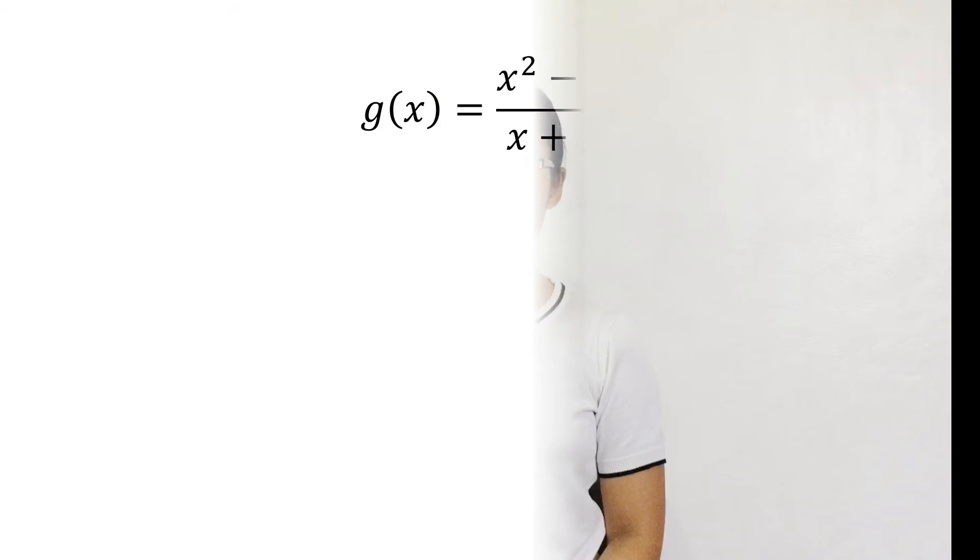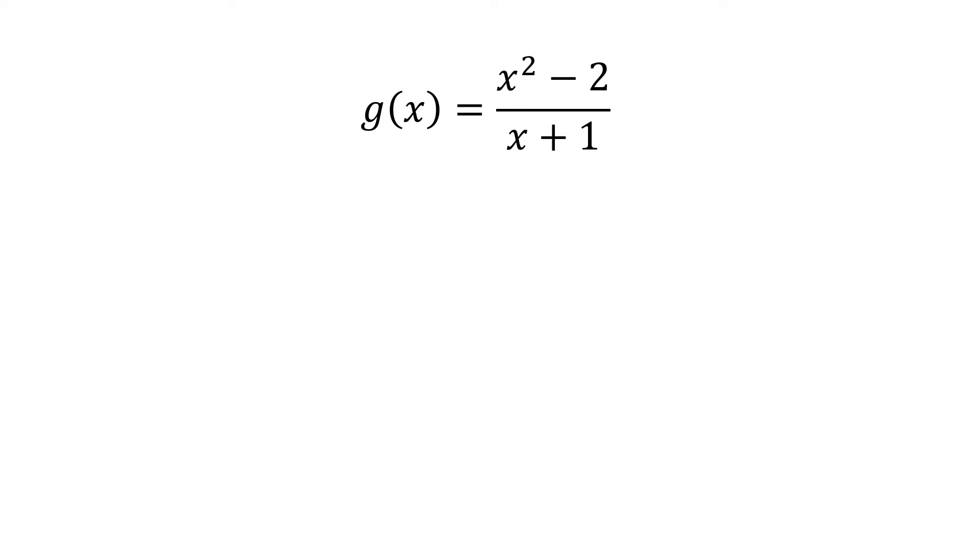For example, we have g(x) = (x² - 2)/(x + 1). Step 1 is to reduce the rational function into lowest terms.